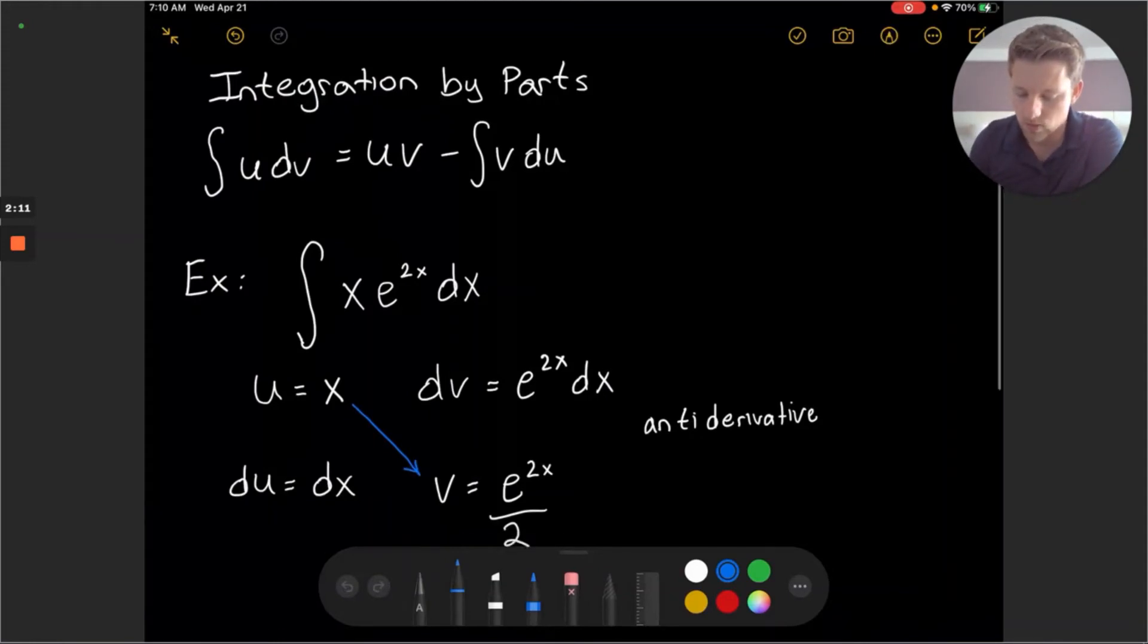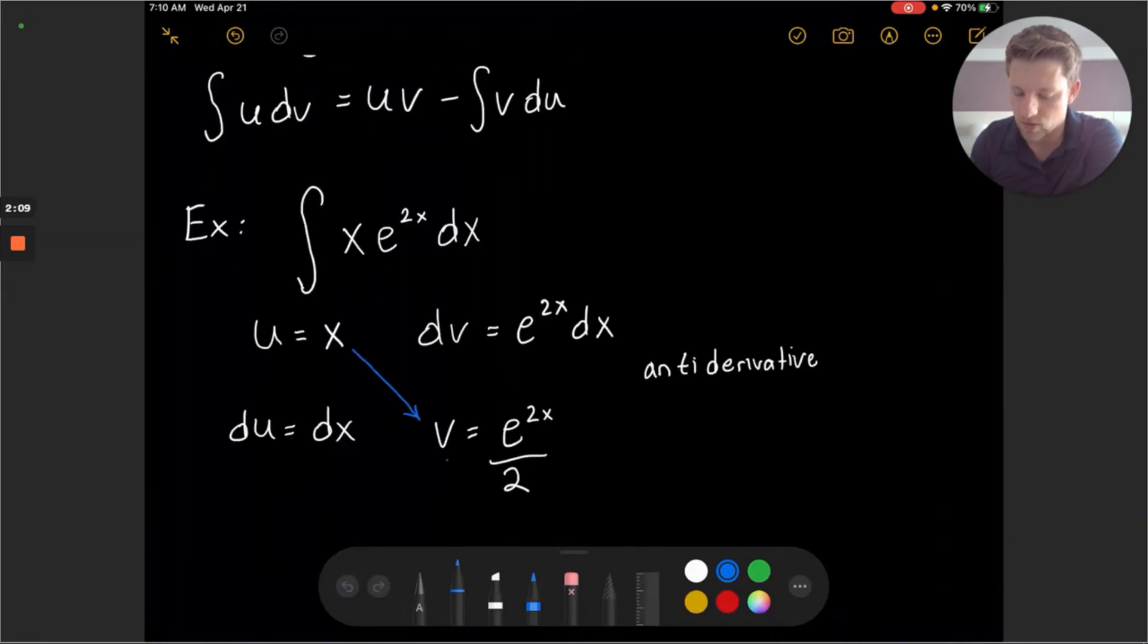And then I'm going to do an integral v du. So I'll take an arrow and place it on the bottom from v to du.